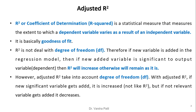However, adjusted r-square takes into account degree of freedom. With adjusted r-square, if a new significant variable gets added, it increases but not to the same extent as r-square. But if an irrelevant variable gets added, it decreases. This is the basic difference between r-square and adjusted r-square.